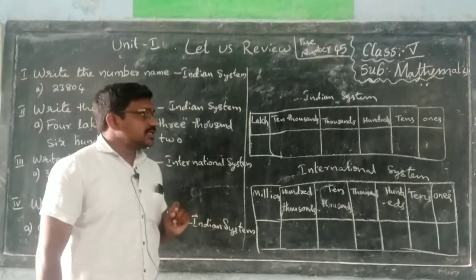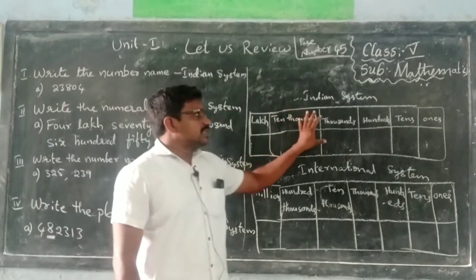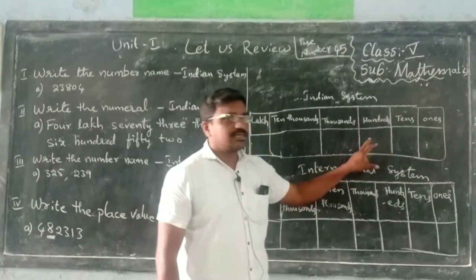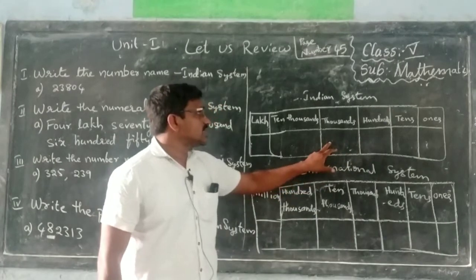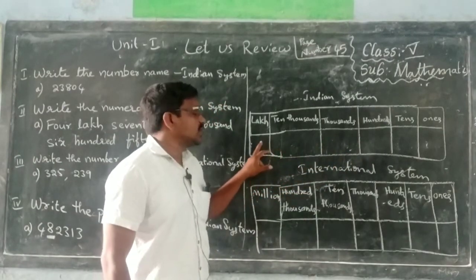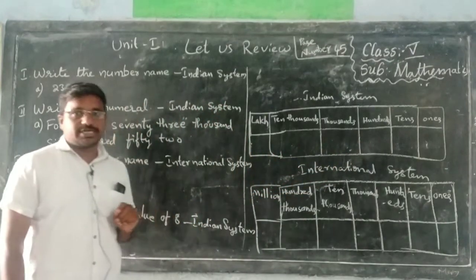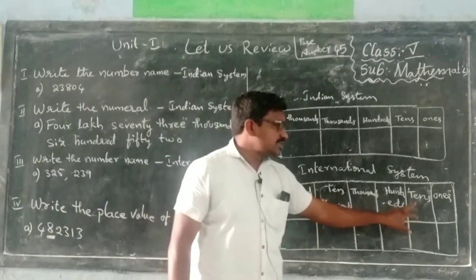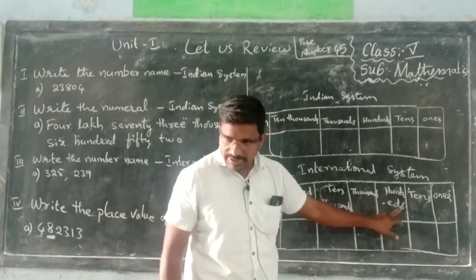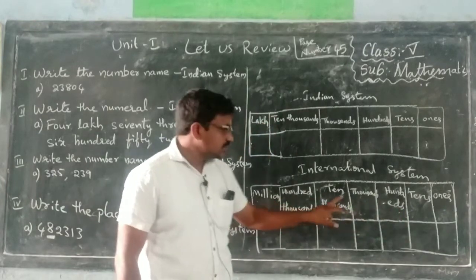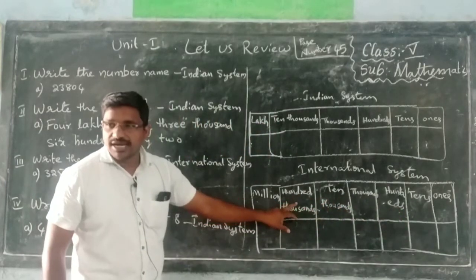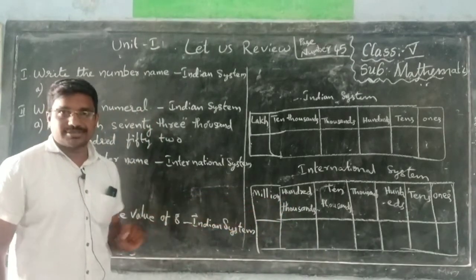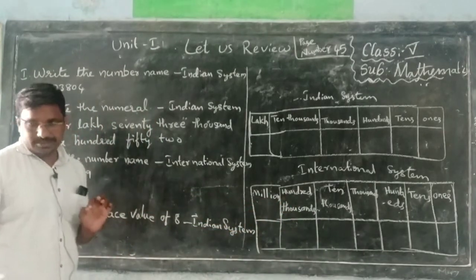Now, here once again we have to revise. In our Indian number system there are: ones place, tens place, hundreds place, thousands, and ten-thousands — up to here we studied. In the International system, we studied: ones, tens, hundreds, thousands, ten-thousands, hundred-thousands, and then afterwards millions.